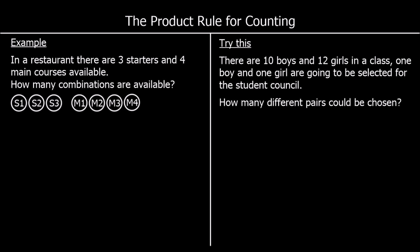Here we've got a question that says: in a restaurant there are three starters and four main courses available. How many combinations of food are available?